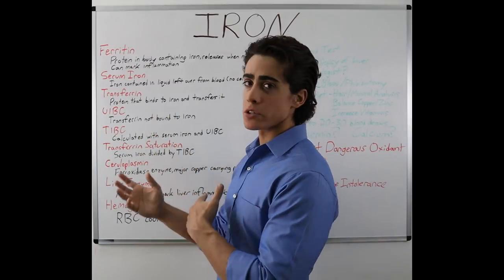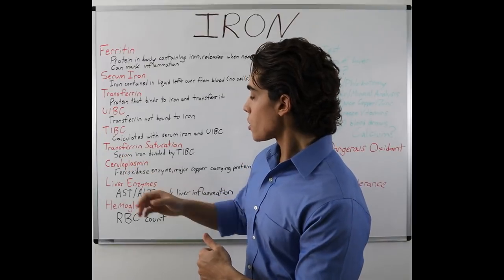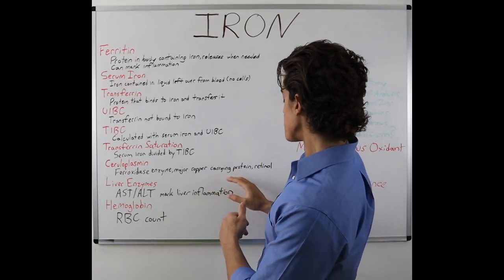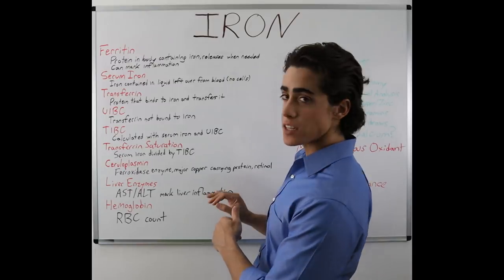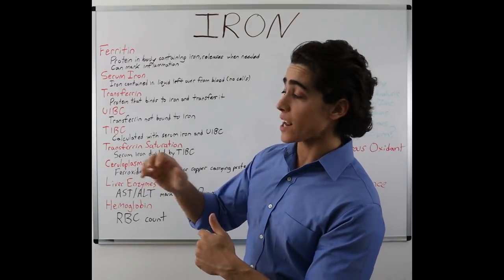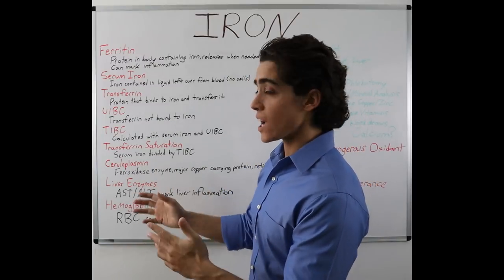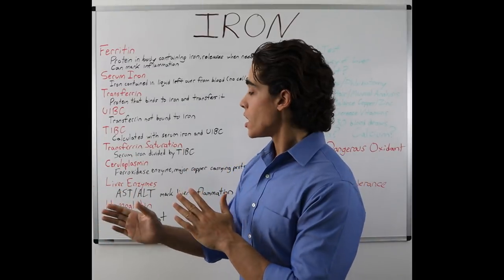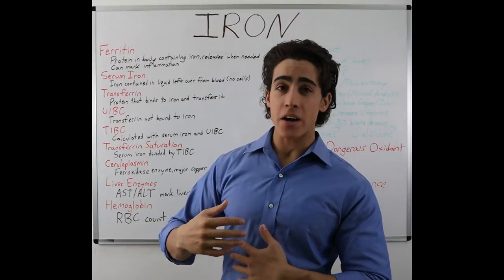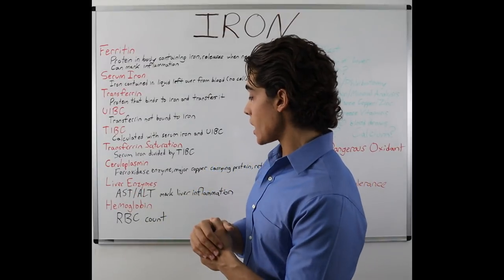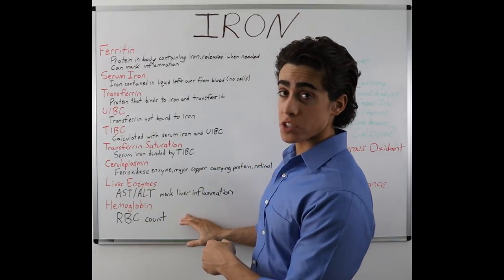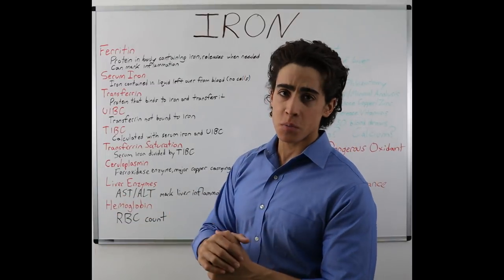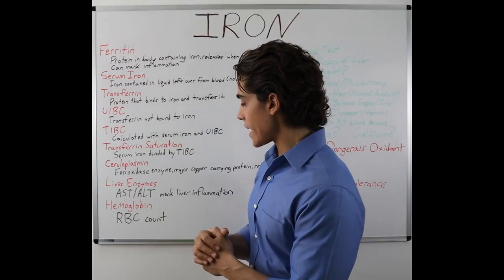These markers are usually used for anemia. Ceruloplasmin is a peroxidase enzyme and the major copper-carrying protein, regulated by retinol, the animal form of vitamin A. Liver enzymes can be irregular in states of damage, but if you only have slight iron storage in your liver, these might not be elevated — so it's very important to check them to mark liver inflammation. Hemoglobin is the red blood cell count.